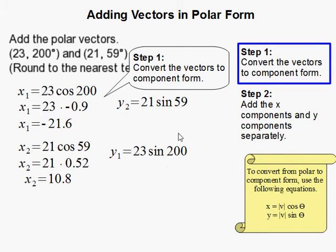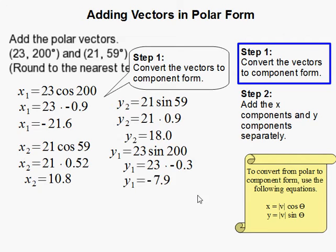We do the same thing with the y's. See if you're awake—here's y2 over here, that's 21 sine 59, 23 sine 200. Then I get my y2 and y1.